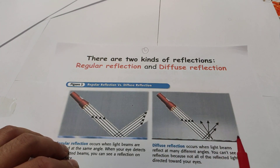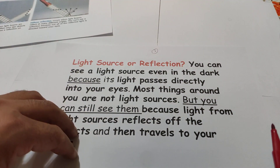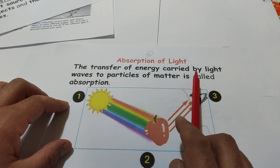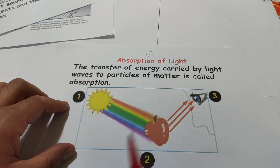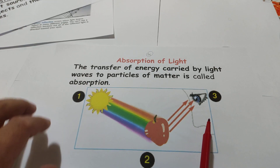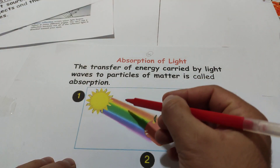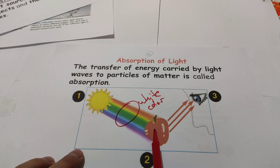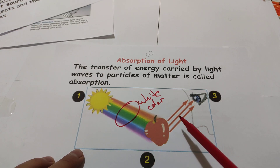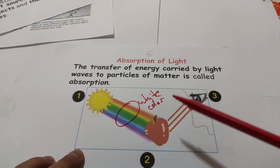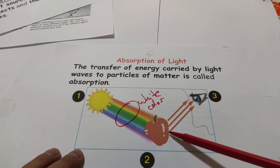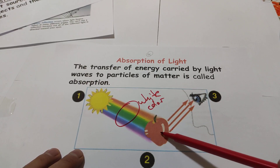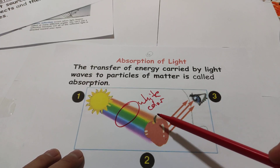For example, the surface of water shows diffuse reflection. Now, absorption of light: the transfer of energy carried by light waves to particles of matter is called absorption. When the seven colors of light come together, it becomes white color. The seven colors come to touch the red apple, but the red apple absorbs six colors and reflects one — red color — to our eyes. So we see red color because the red apple reflects only red and absorbs the other six colors.